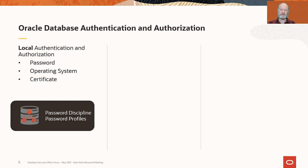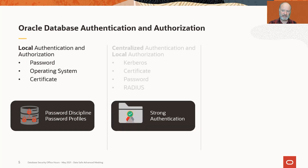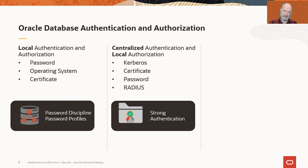When you think about database authentication, what you're usually looking at is local authentication — in other words, password, operating system, or certificate — where the database consults its own internal stores or resources to determine if the person trying to log in is who they say they are and what privileges they should have. As you scale up to multiple databases, local authentication may no longer make sense, and so many people go for centralized authentication. Things like Kerberos, certificate-based, password, and radius, which is the topic of this particular announcement.